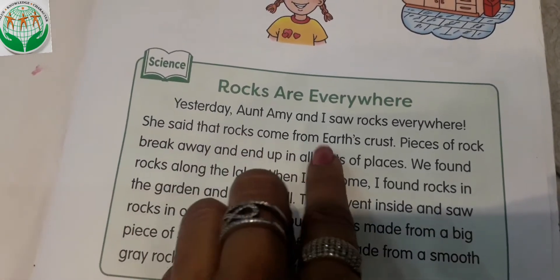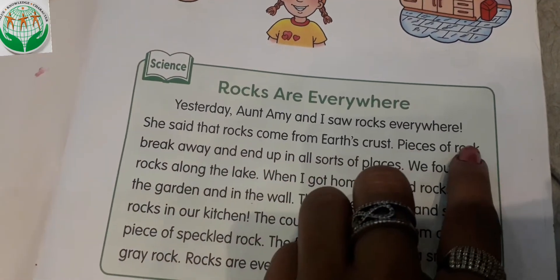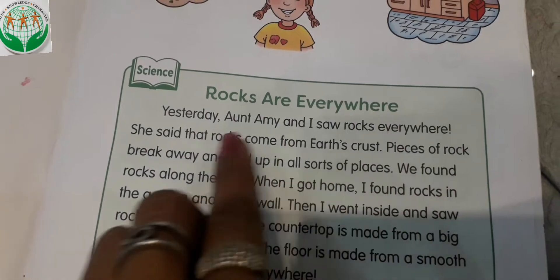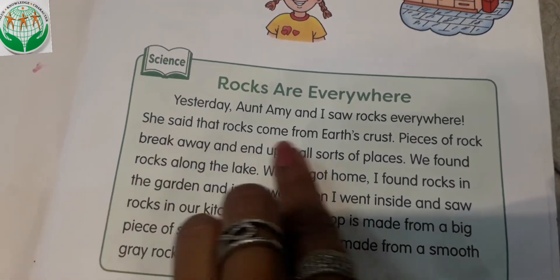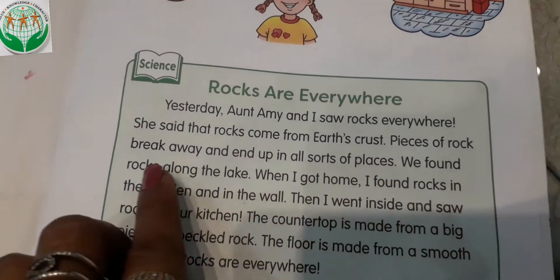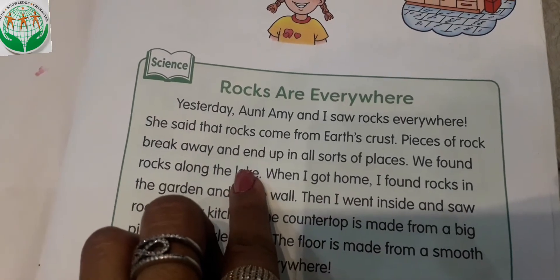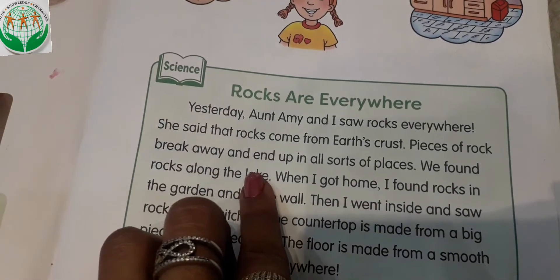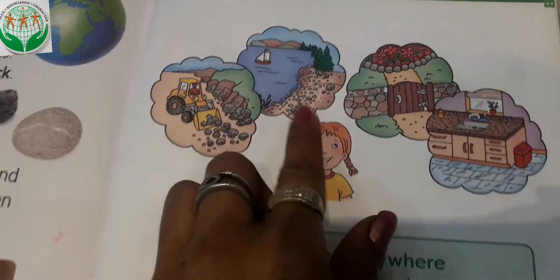Rocks are everywhere. Yesterday Aunt Emmy and I saw rocks everywhere. She said that rocks come from earth's crust — उन्होंने बोला कि rocks अर्थ की पर्तों में पाई जाती है। Pieces of rock break away and end up in all sorts of places — rock की जो pieces होते है वो टूट जाते है और वो हर जगह पे फैल जाते है। We found rocks along the lake — हमने rocks को lake के पास में भी पाया।